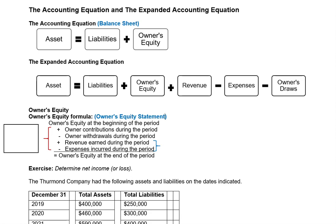Revenue is what we earn from doing what the business does. If we're Walmart, they sell things, and sales is a revenue account. Expenses are the costs that we incur to earn our revenue — for example, the cost of the product we sell and the cost of running our store, such as electricity and rent. We subtract our expenses from our revenue, and that's where we get our net income or net loss. Revenue minus expenses is our net income, unless we have more expenses than revenue, in which case we'll have a net loss. These accounts appear on our income statement.